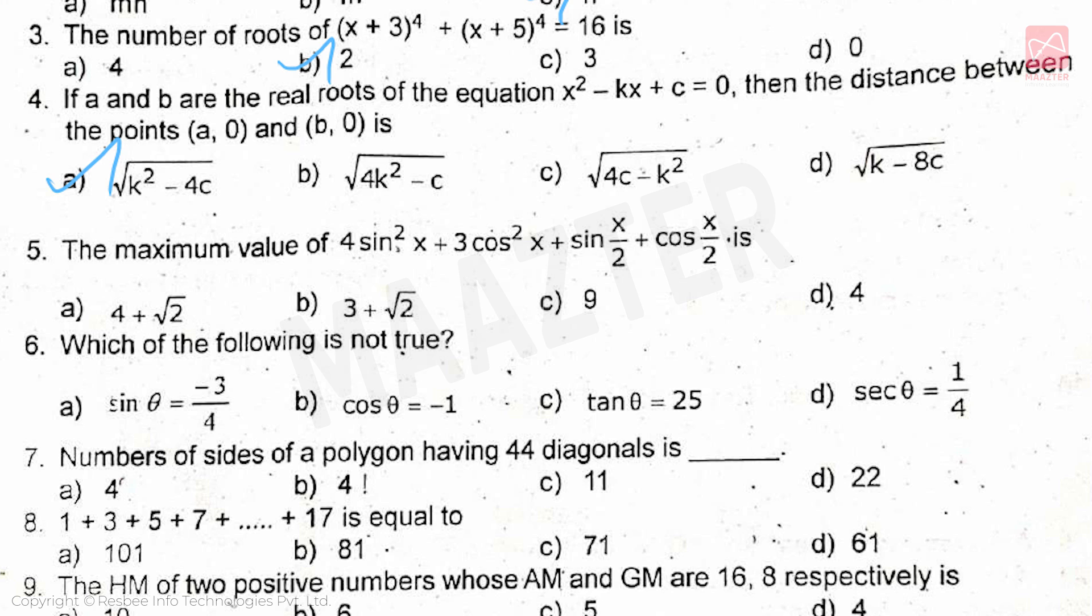If a and b are the real roots of the equation x² - kx + c = 0, then the distance between the points (a, 0) and (b, 0) is, answer is option A. Next, the maximum value of 4sin²x + 3cos²x + sin(x/2) + cos(x/2) is, answer is option A.